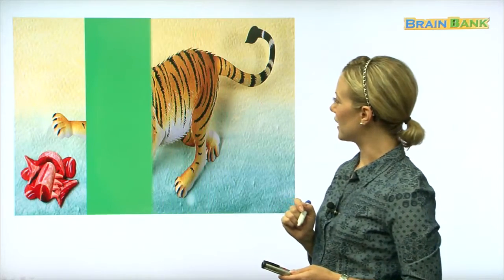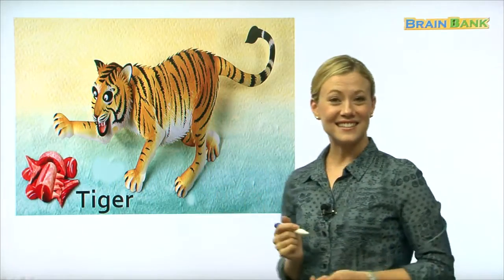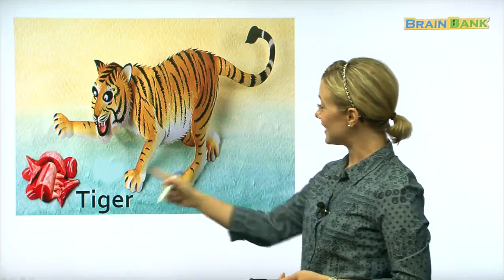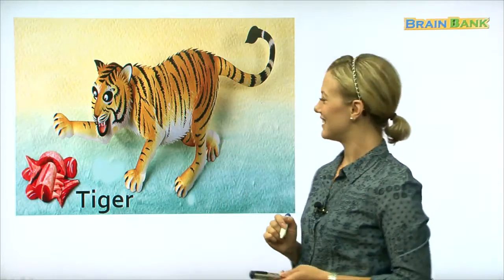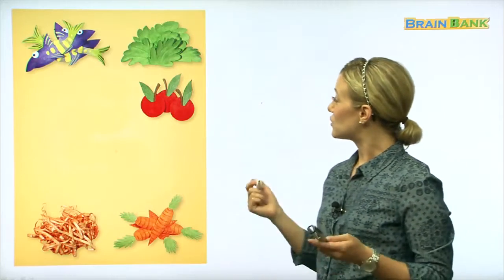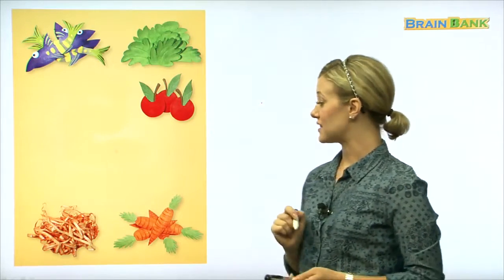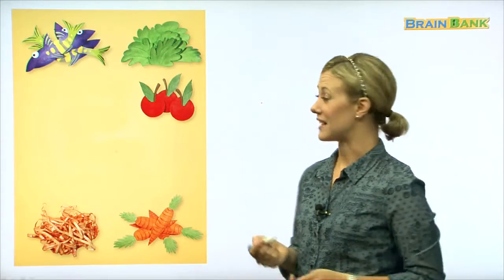Here it comes. Ah-ha. It's a tiger. The tiger likes to eat meat. Very good. Okay. So, now we have many different kinds of food that animals like to eat.